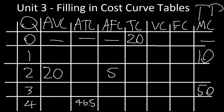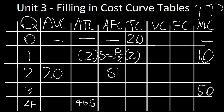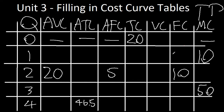The next easy thing we can do is find our fixed costs. We can do this using average fixed costs. AFC is simply FC over Q. So if we want to find FC, multiply both sides by Q — just like in algebra. In this case, 5 (which is AFC) equals fixed costs over the quantity, which is 2. So multiply both sides by 2, and fixed costs is 10. Just by getting one part of fixed costs, we already know the entire column, as fixed costs are fixed and don't vary with output.